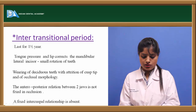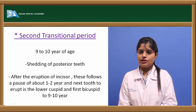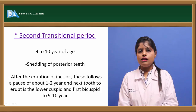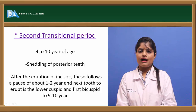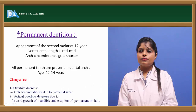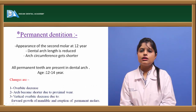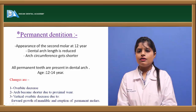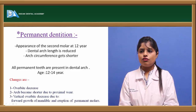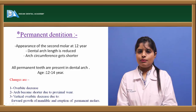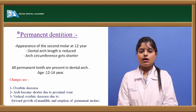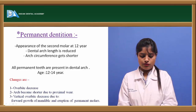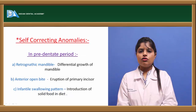The second transitional period spans 9 to 10 years of age; all posterior primary teeth are shed and the cuspids, premolars, and permanent first molars erupt, establishing occlusion. Permanent dentition is signified by eruption of the second permanent molar at age 12, with all permanent teeth present by 12 to 14 years. The arch diameter, length, and circumference are reduced. Major characteristics of this stage include a decrease in overbite and overjet, decrease in arch length and circumference, and final establishment of occlusion.